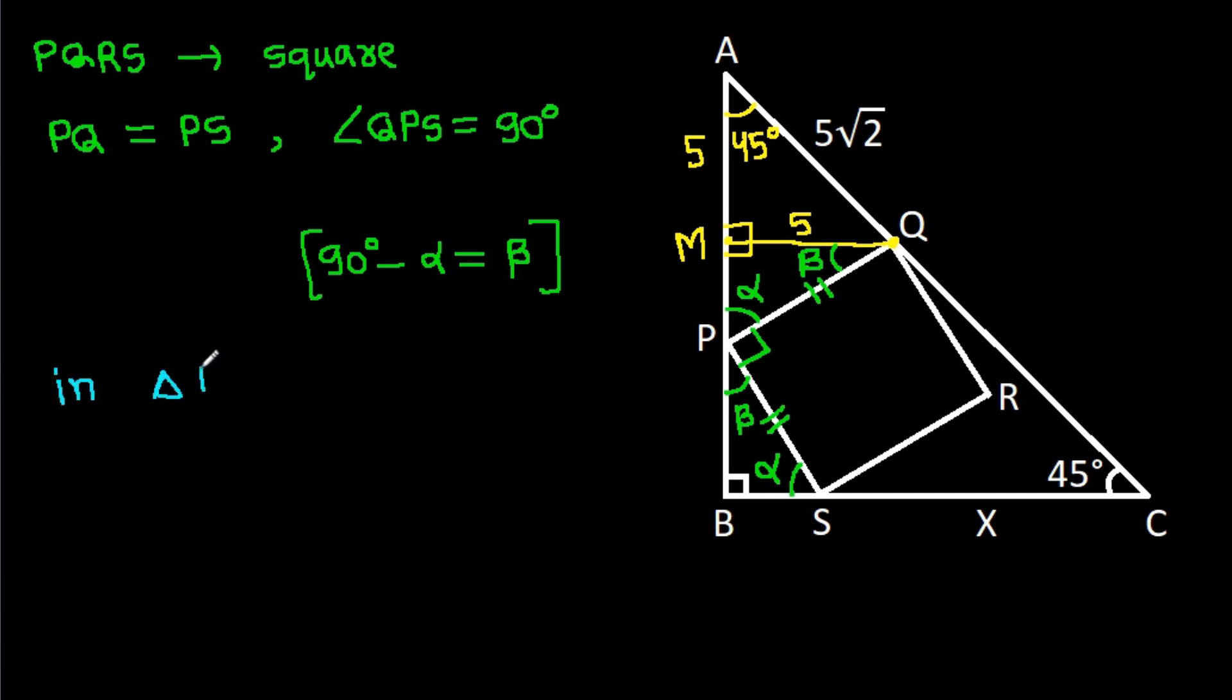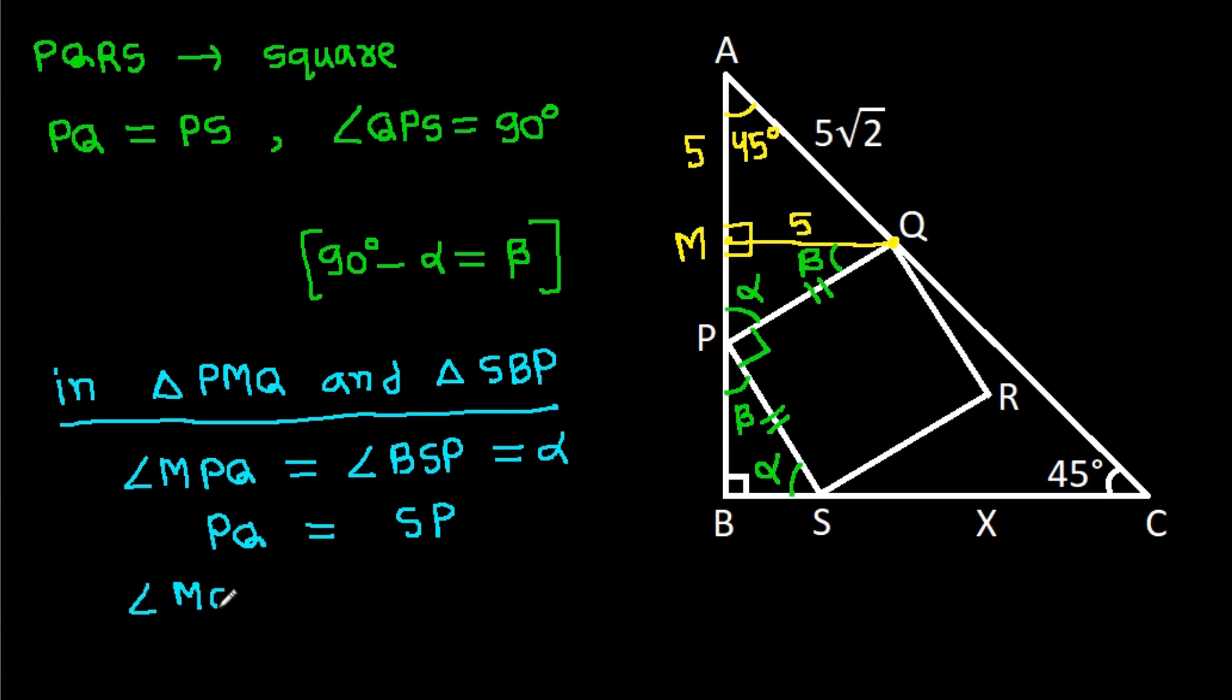And now in triangle PMQ and in triangle SBP, we have angle MPQ is equal to angle BSP, and angle MQP is equal to angle BPS. So triangle PMQ will be congruent to triangle SBP.